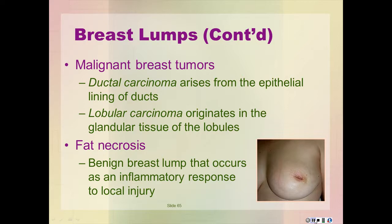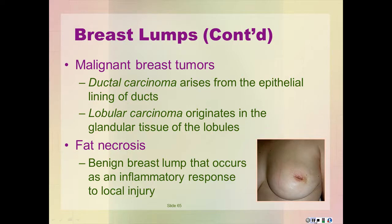Malignant breast tumors include ductal carcinoma arising from the epithelial lining of ducts, and lobular carcinoma originating in the glandular tissue of the lobules. The pathophysiology includes mutations of normal cells resulting in uncontrolled cell division and tumor formation, invasion of surrounding tissue, and metastasis through the lymph and vascular systems. The peak incidence is between ages 40 to 75. Symptomatology includes a painless lump, changes in size, shape, or contour of the breast, tender axillary lymph nodes, dimpling, retraction, or prominent vasculature, peau d'orange or thickened skin appearance, and nipple inversion or deviation.